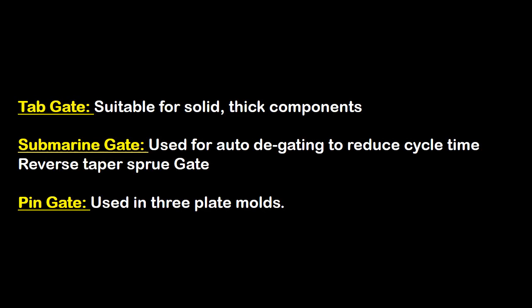Continuing gate types: tab gate — suitable for solid thick components; submarine gate — used for auto de-gating to reduce cycle time; reverse taper sprue gate; and pin gate — used for 3-plate molds only.